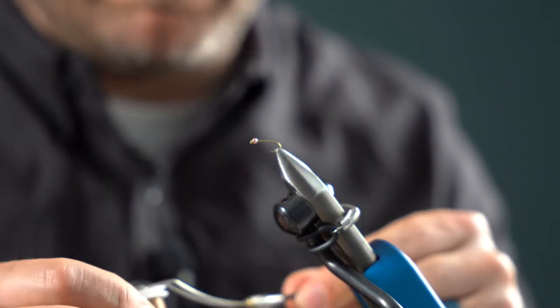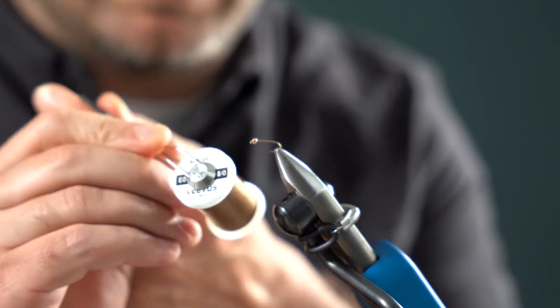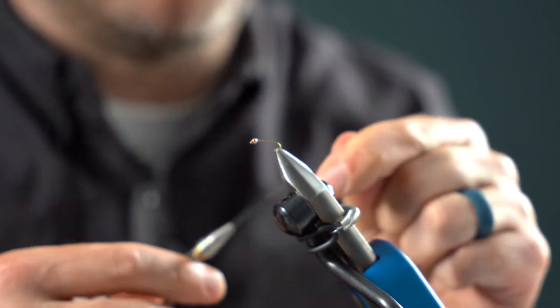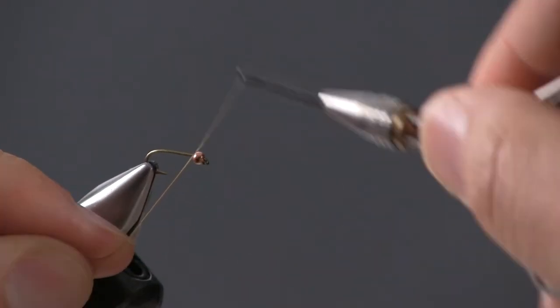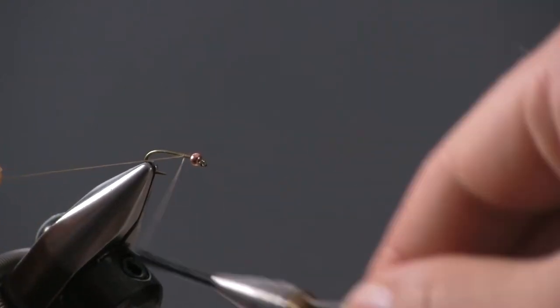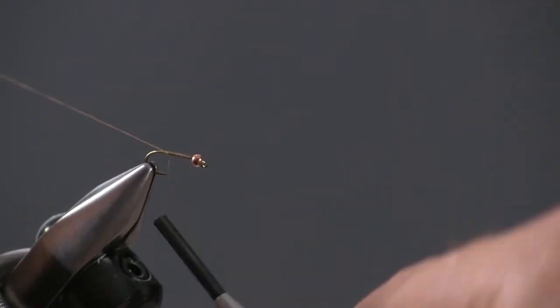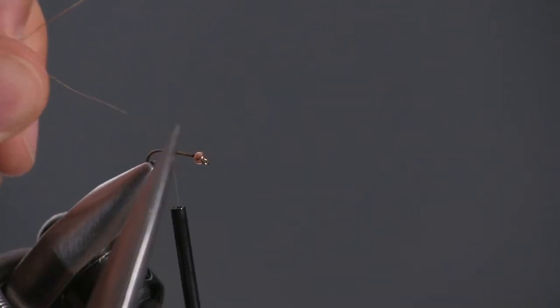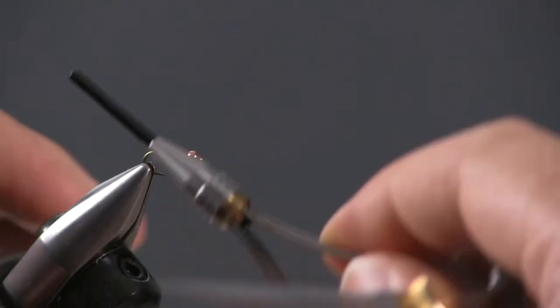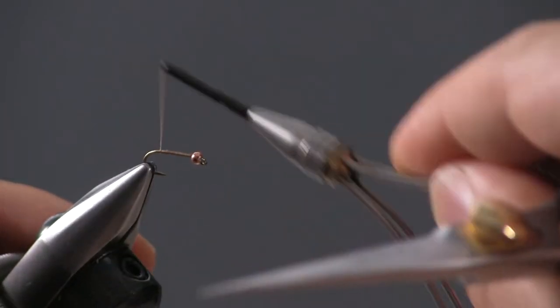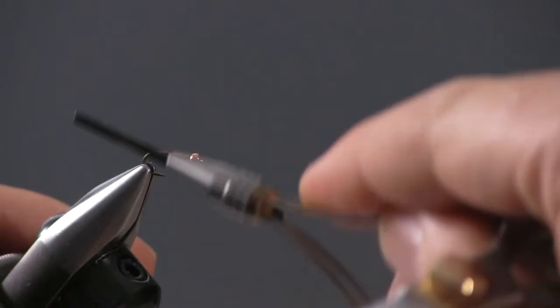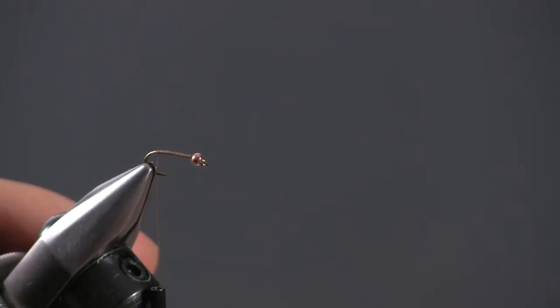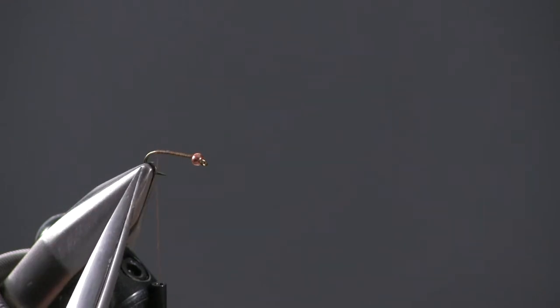We're going to start with some Veevus. This is Veevus thread, an 8/0 Veevus thread in brown. And we're just going to get started, get that thread started on the hook and start moving down. It's important when you're tying to have reference points to work from. And when I'm tying, I like to use the hook as the reference. And when I put on that thread base, I want it to stop right at that barb of that hook. That's the length of the body.